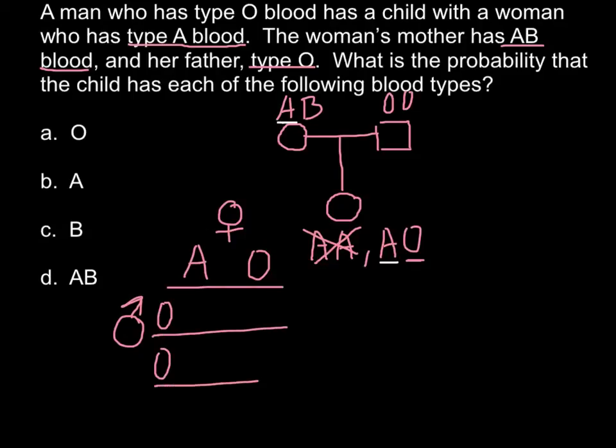And now we build a Punnett square. And now we can predict all the outcomes of such a cross between these two people. So, here they may have AO, OO here, AO here, and OO here.